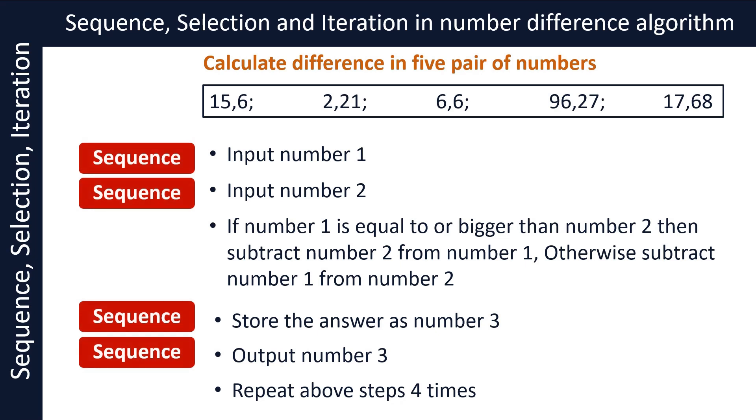If number one is equal to or bigger than number two, then subtract number two from number one. Otherwise, subtract number one from number two. This is an example of the selection construct. In this step we are asking a question, and depending on the answer we either subtract number two from number one or vice versa.